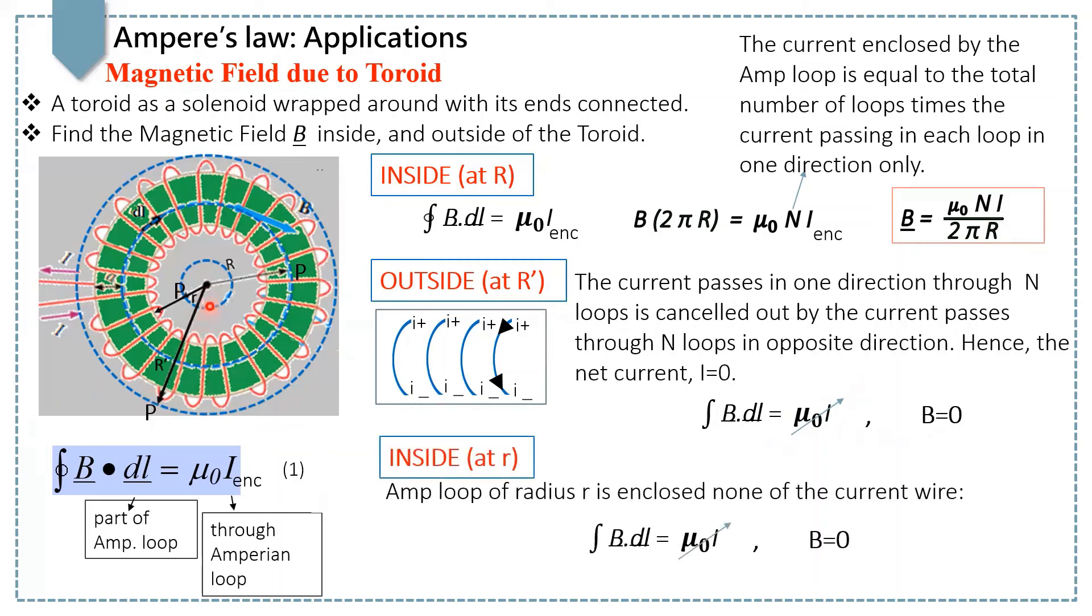To find the magnetic field inside at this point P, let's draw the Amperian loop of radius R. The question is how much current is enclosed by this Amperian loop? The answer is there is no current wire enclosed by this Amperian loop, hence current is 0.